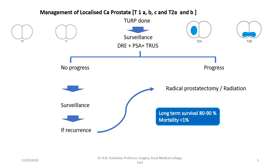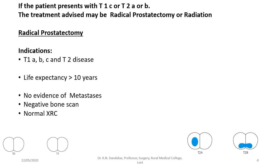The long-term survival with judicious treatment will be 80–90% with mortality rate less than 10%. The next set of patients with early localized carcinoma prostate will be T1C with increased PSA levels, or T2A or T2B. T2A is where the lesion is confined to one side within the capsule, and T2B is where the lesion occupies both sides of the prostate but confined within the capsule. The treatment advised may be radical prostatectomy or radiation. Radical prostatectomy is a major surgery and requires an experienced surgeon, as it can be morbid and difficult to perform with possible complications.